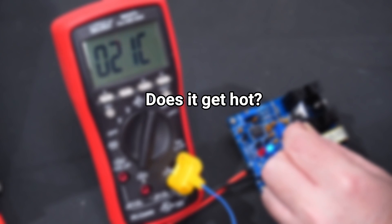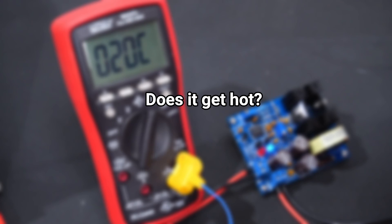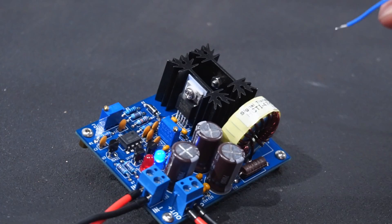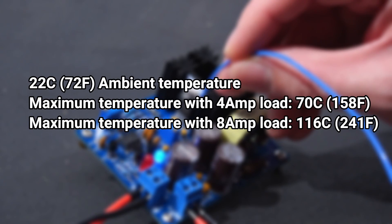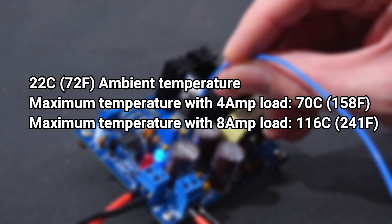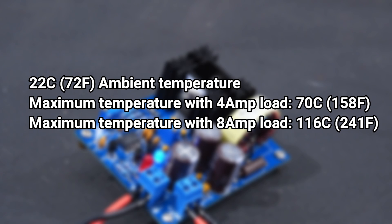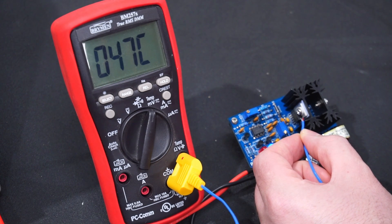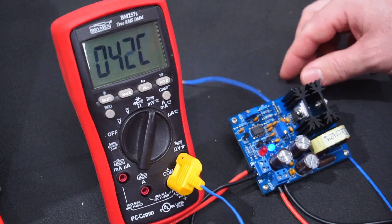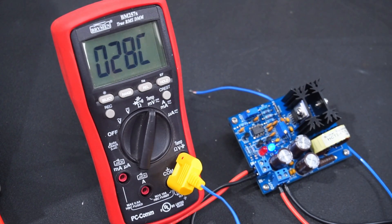And what about thermal performance? With the buck converter in free air without a fan blowing any air over the heat sinks, temperatures stabilised at 70 celsius for a 4 amp load and 116 celsius for an 8 amp load. To keep temperatures at a manageable level adequate ventilation should be used. And with currents above 4 amps consider using a small fan to push air over the heat sinks.